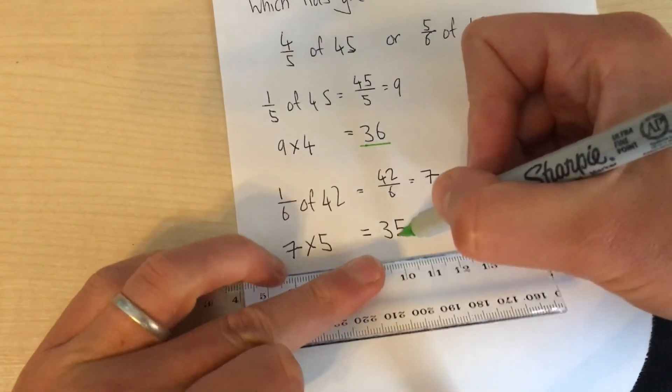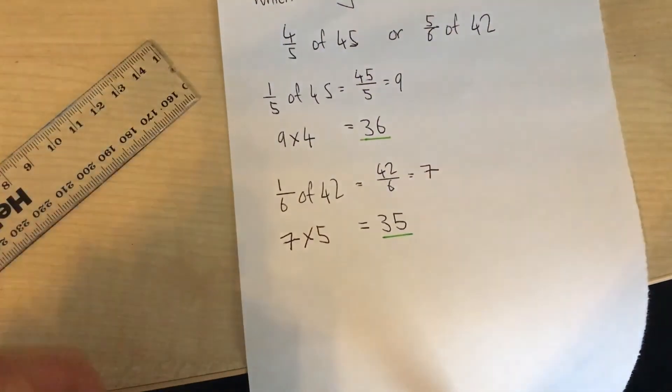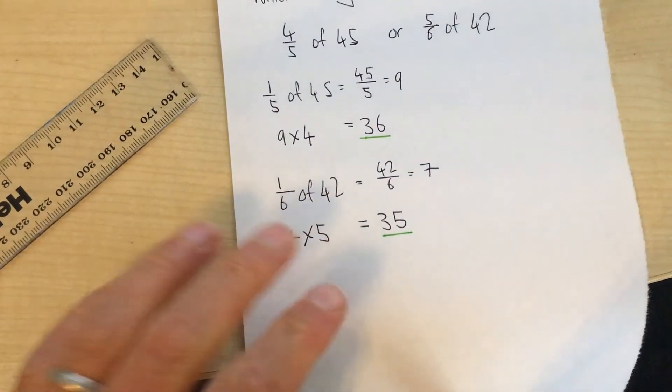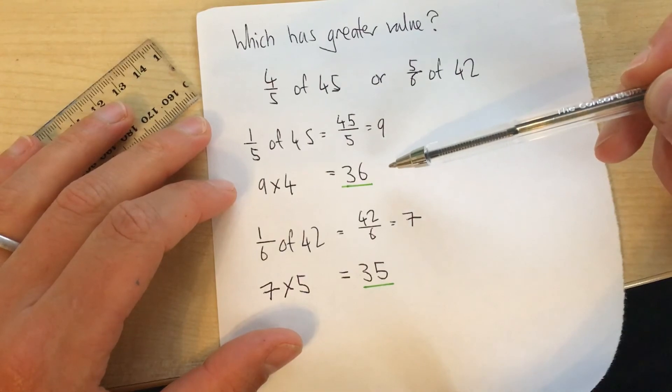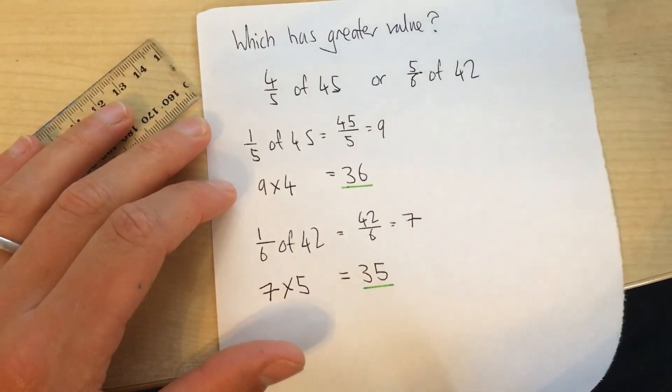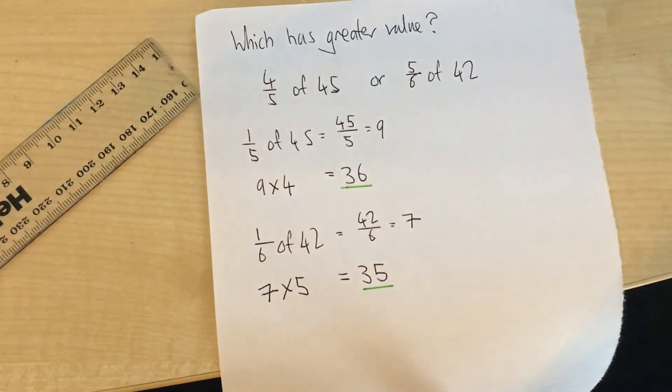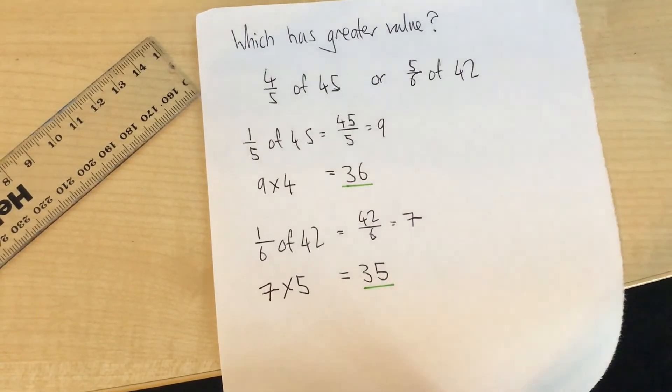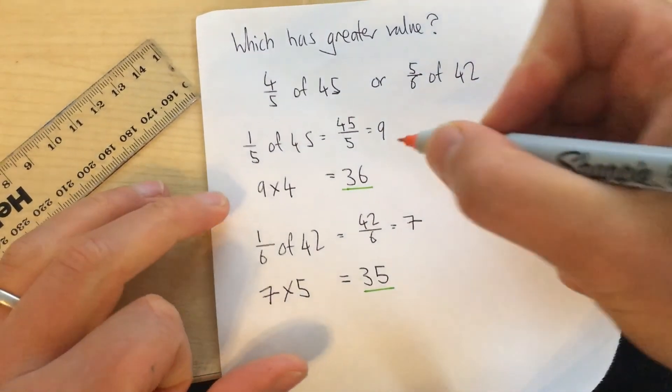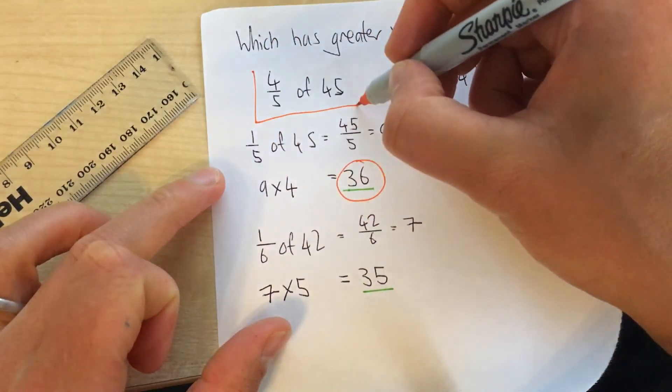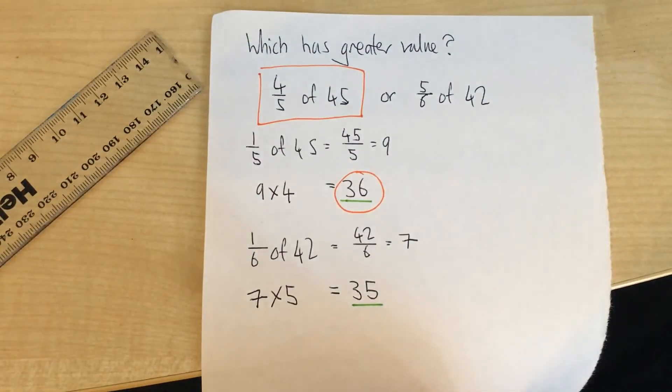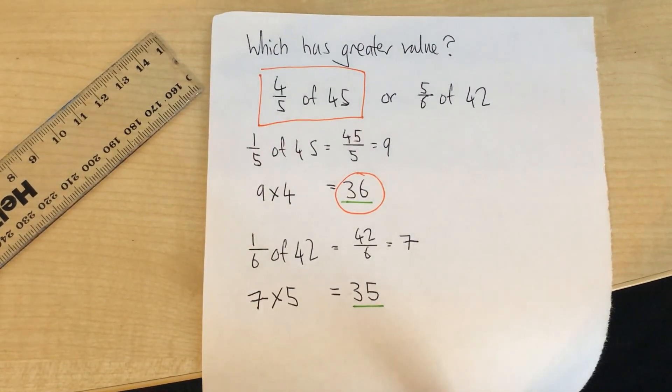So to answer the question, which has the greater value? Is it 4 fifths of 45, which is 36? Or is it 5 sixths of 42, which is 35? Well, we can see clearly the answer is this one, 36. So 4 fifths of 45 has the greater value.